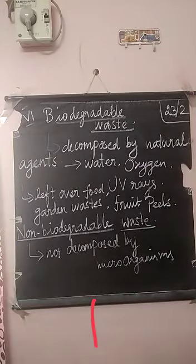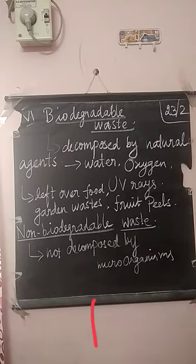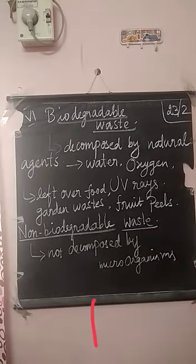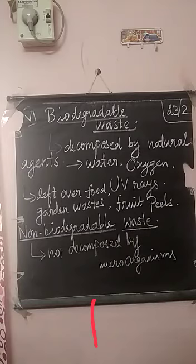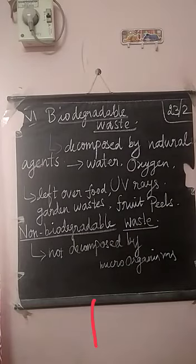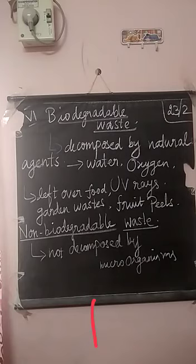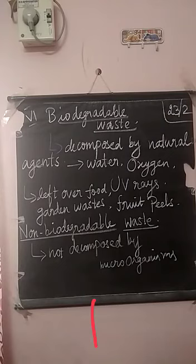In your book on page number 55, there is an activity with a tabular column — give some examples for biodegradable waste and non-biodegradable waste. You have to write the examples in that tabular column separating biodegradable waste and non-biodegradable waste. The next topic is pollution, which we will see in the next video.